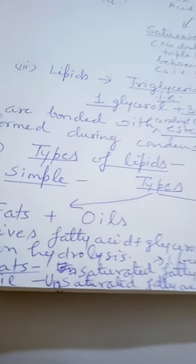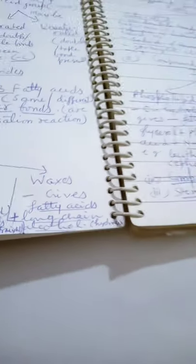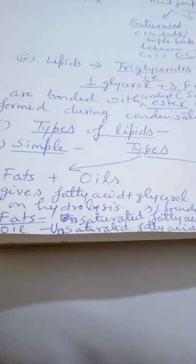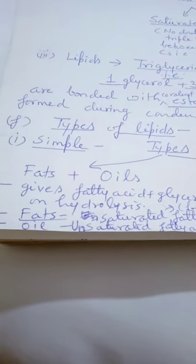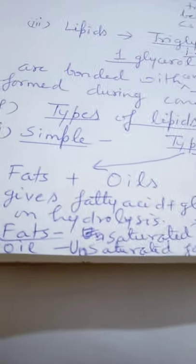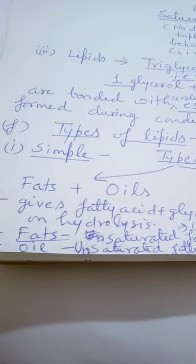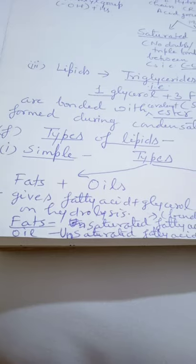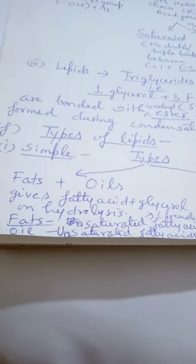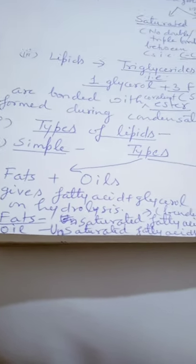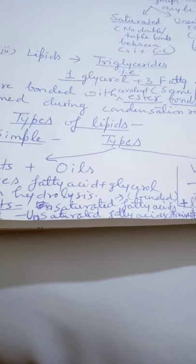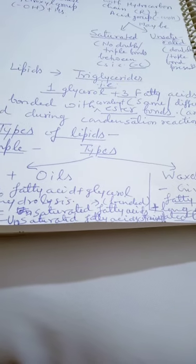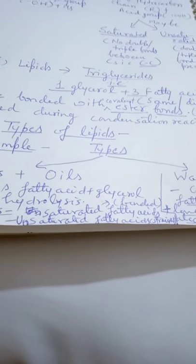Lipids may be of three different types. Simple lipids include fats and oils on one hand, and waxes on the other — waxes are very hard, oils are soft and slippery, and fats are comparatively more solid than oils. On hydrolysis, fats and oils both give fatty acid plus glycerol. The difference is that fats have saturated fatty acids while oils have unsaturated fatty acids.